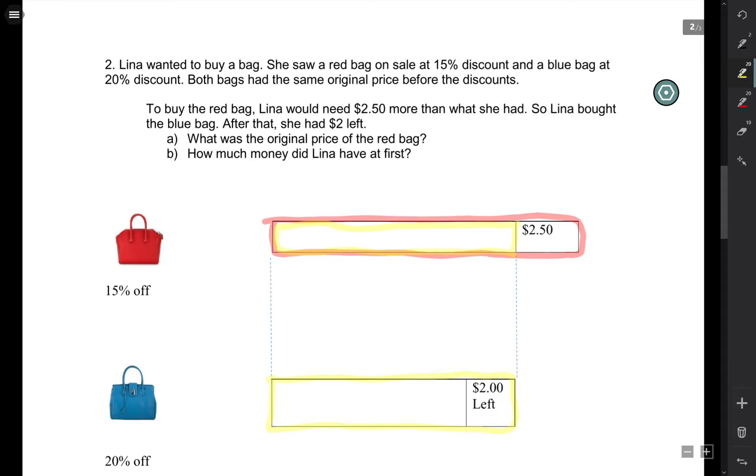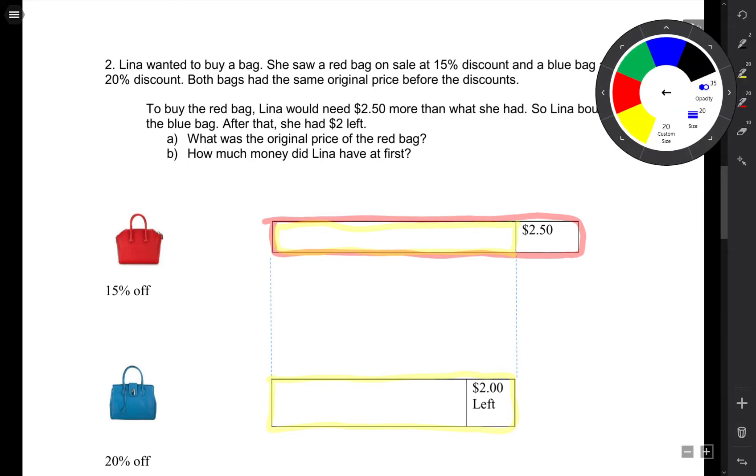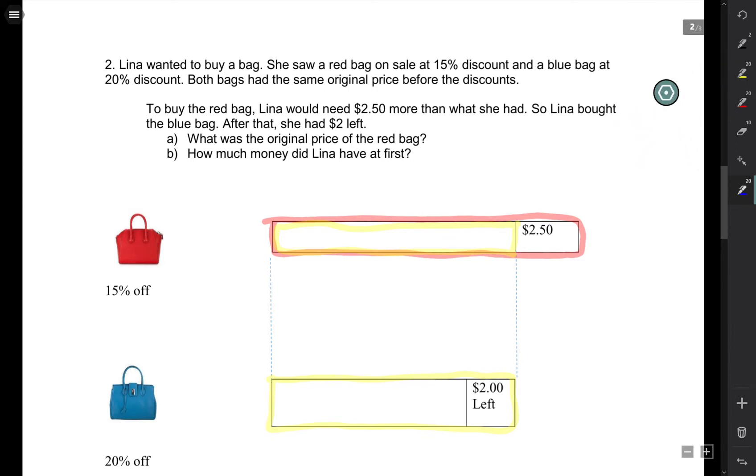Now, for her to buy the blue bag, she has more than enough. That means yellow is more than enough. And she is going to have $2 left. Let me just choose a blue color to show you what I mean. The blue color, the price of the blue bag is actually here. This part. That's the blue color.